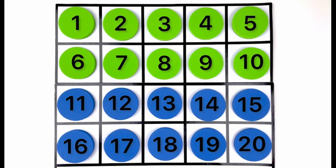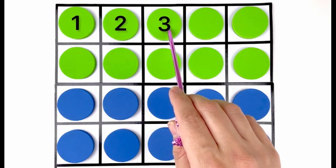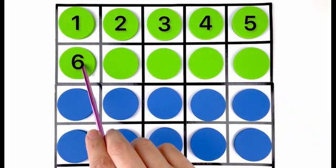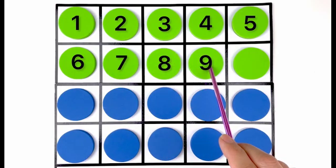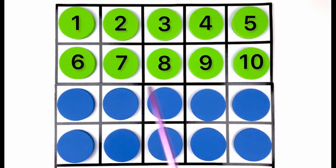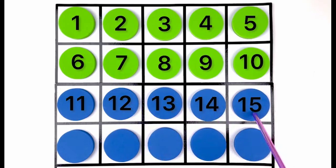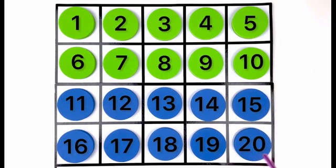Let's count them again. One, two, three, four, five, six, seven, eight, nine, ten, eleven, twelve, thirteen, fourteen, fifteen, sixteen, seventeen, eighteen, nineteen, twenty. Twenty circles.